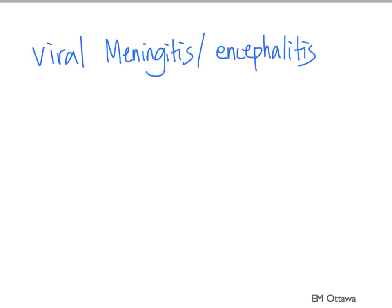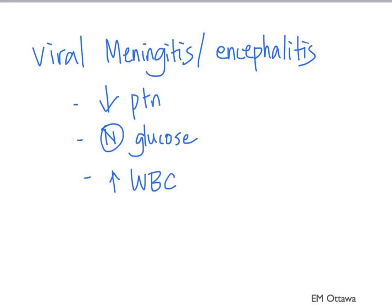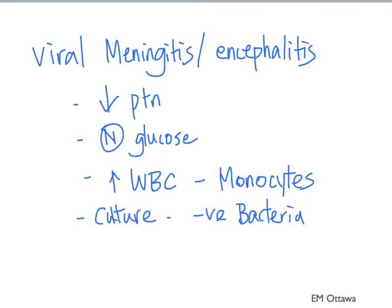In viral meningitis or encephalitis, we will see low protein, normal glucose, and a high white blood cell count with mostly monocytes. The gram stain and culture are negative for bacteria, and the viral PCR may be positive.